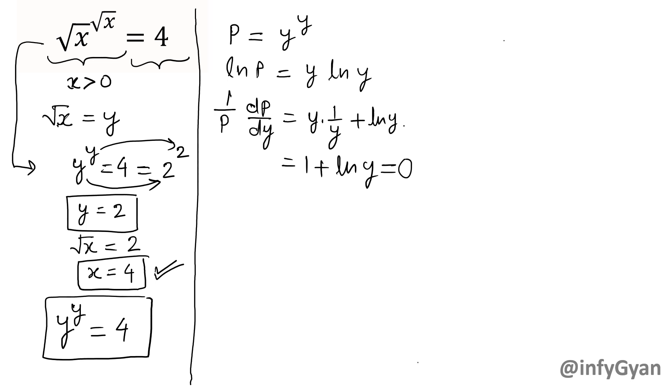Now we have to find out critical points. So we will put dp/dy = 0, the derivative must be equal to 0 for critical points. So 1 + ln y = 0, ln y = -1, exponent form e^(-1) or 1/e.